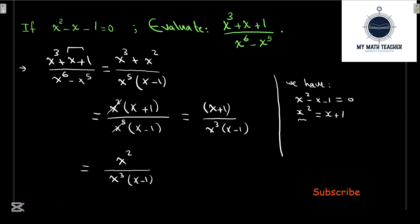Now we have 1/(x(x - 1)). From the given equation x² - x - 1 = 0, we can rewrite it as x² - x = 1.